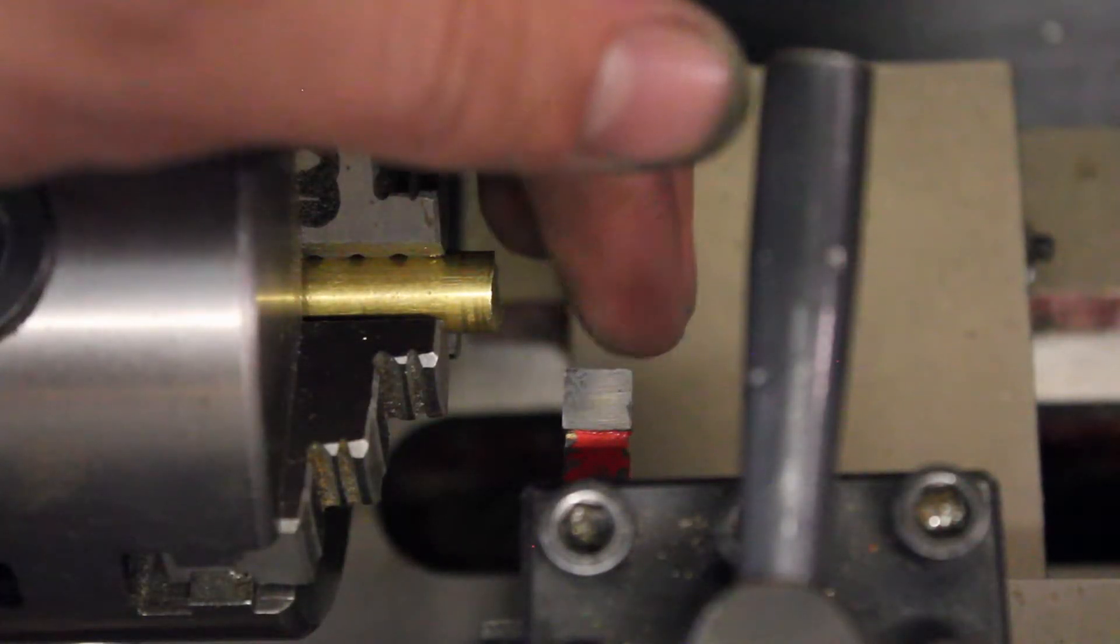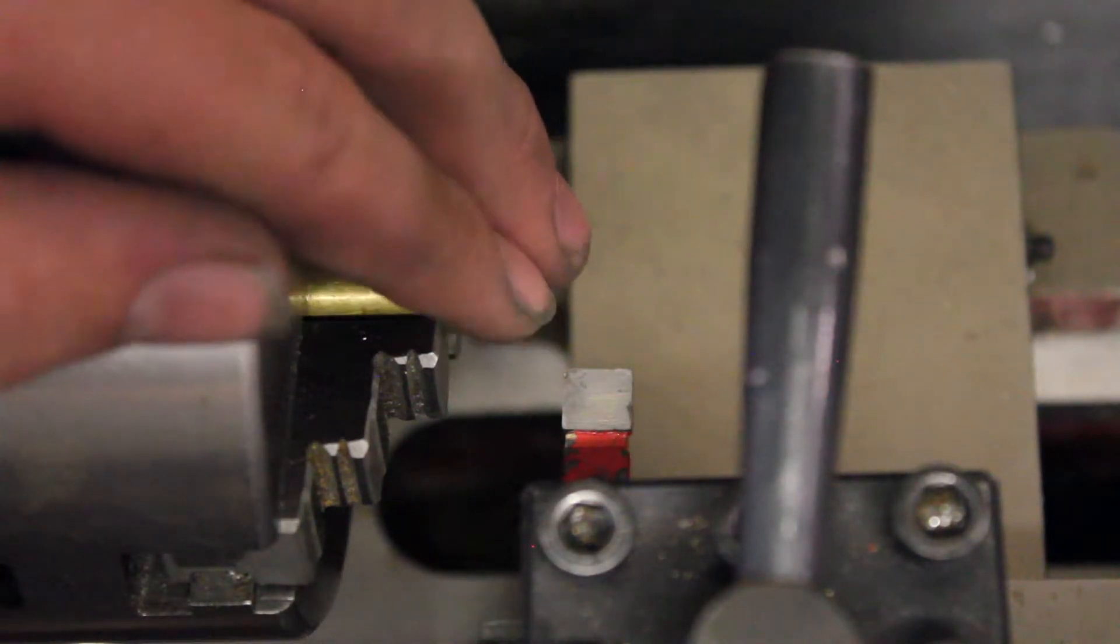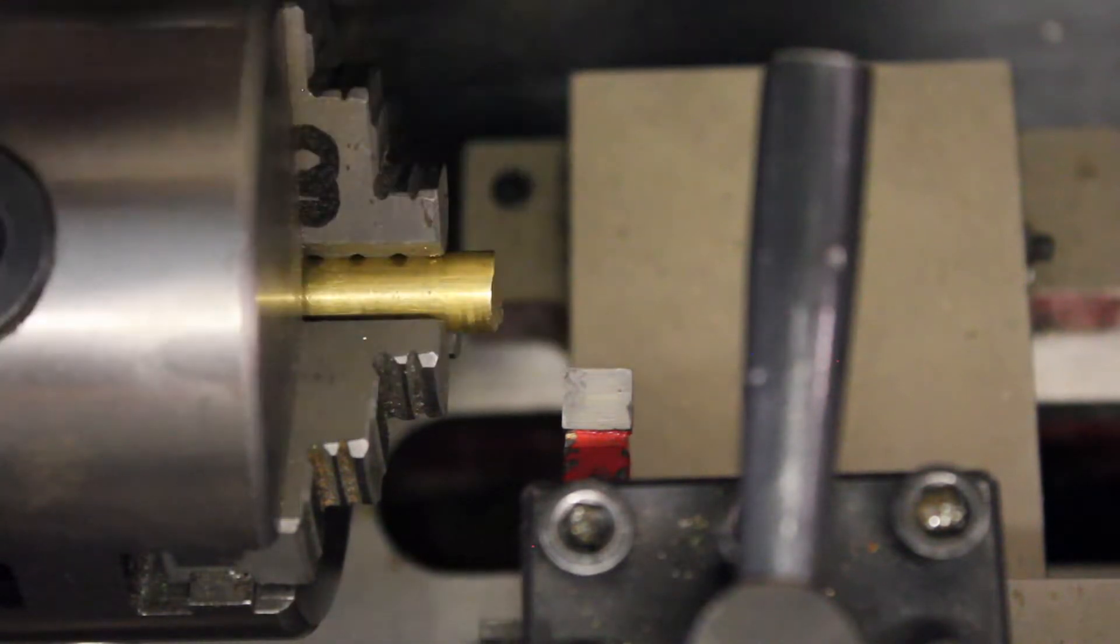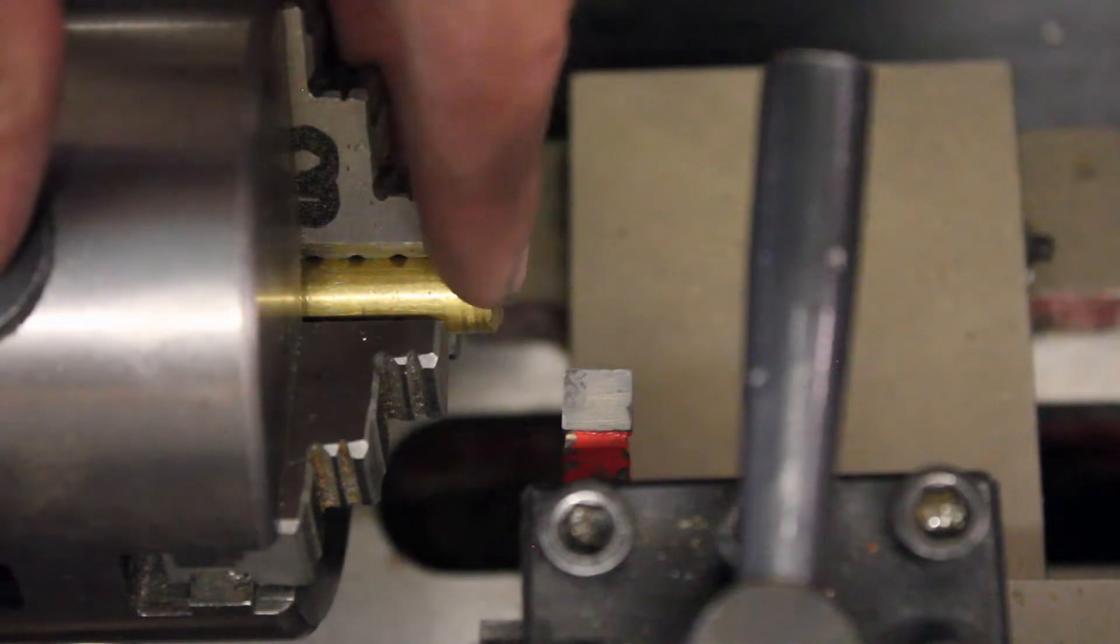Lathe tools come in all shapes and sizes, but no matter what kind you have, they'll always have at least one cutting edge. For this tool, this corner right here is my cutting edge. The cutting edge is just the part that will contact your metal and actually do the cutting.